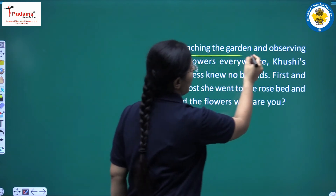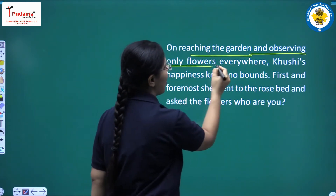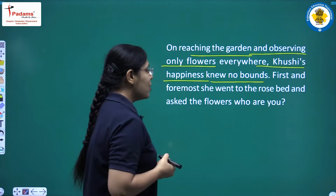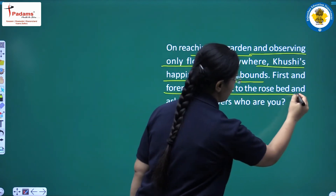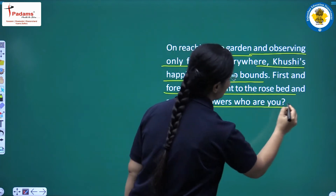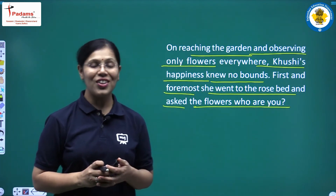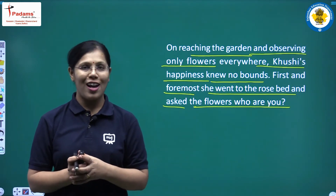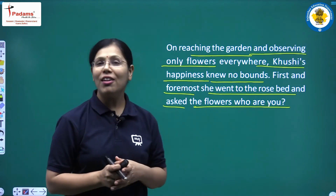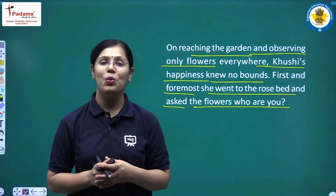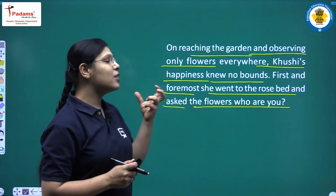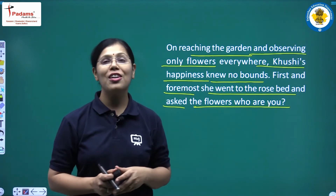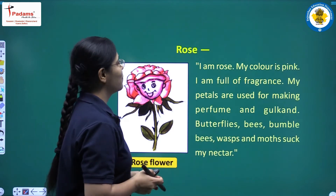On reaching the garden and observing flowers everywhere, Khushi's happiness knew no bounds. First and foremost she went to the rose bed and asked the flowers, 'Who are you?' Khushi reached the garden and when she reached there she observed a lot of flowers everywhere and she was very happy at that time. Her happiness knew no bounds.